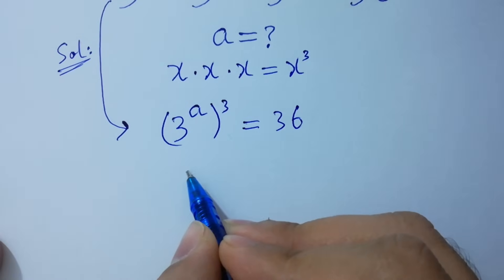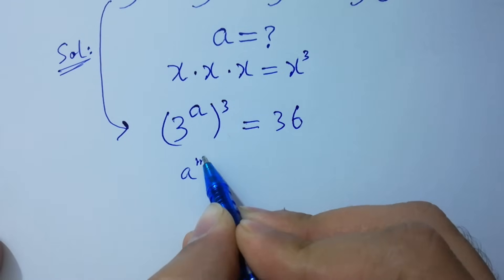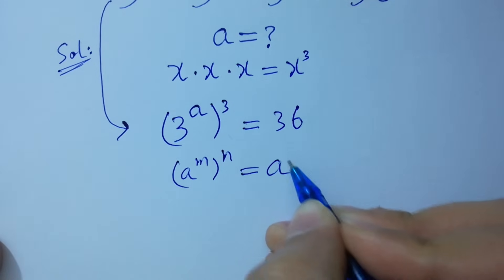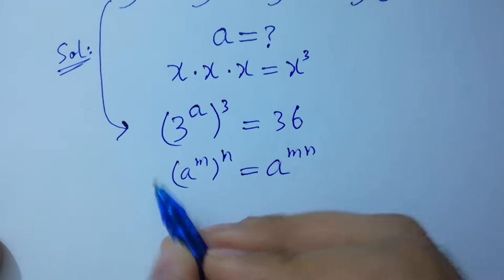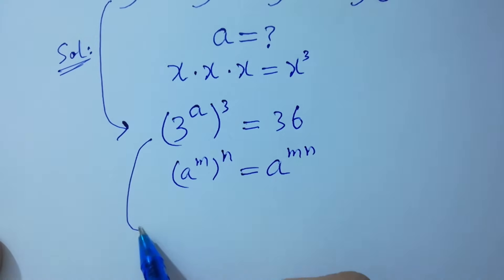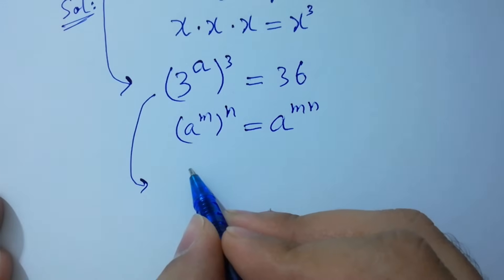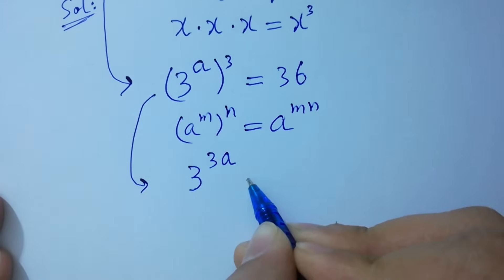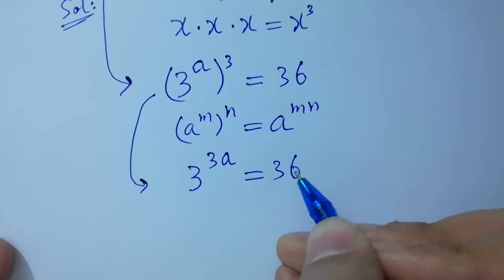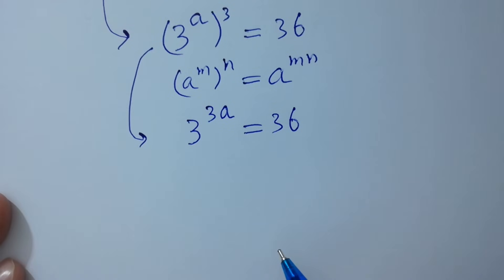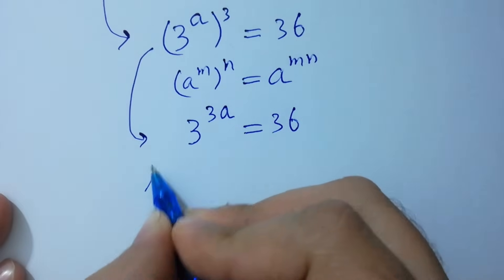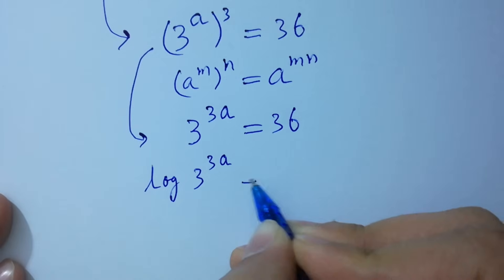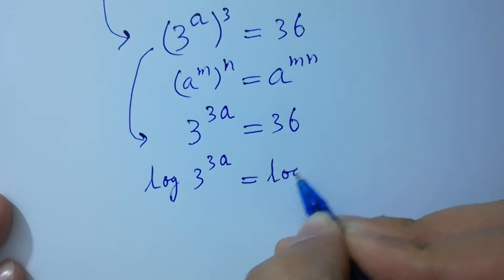As a to the power m, to the whole power n, equals a to the power mn, we have 3 to the power 3a equal to 36. Take log on both sides: log of 3 to the power 3a equals log 36.